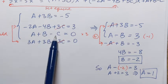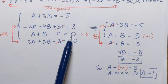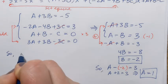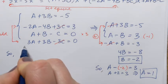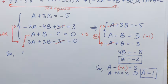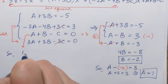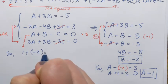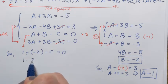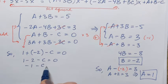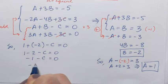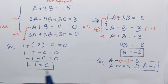Now I have a and b. Going back to the original system and using the third equation (a plus b minus c equals 0): plugging in 1 plus (negative 2) minus c equals 0, so negative 1 minus c equals 0, giving c equals negative 1.